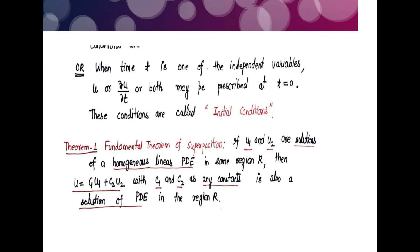When time t is one of the independent variables, the function u, or its derivative with respect to t, or both, may be prescribed at time t = 0. These are called initial conditions. Given a PDE along with boundary conditions or initial conditions, we find its particular solution.